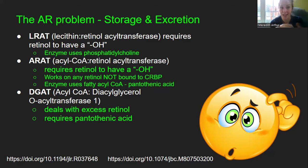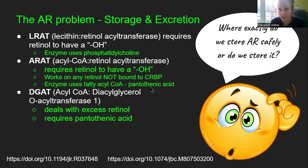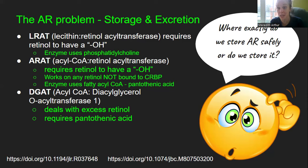DGAT (acetyl-CoA diacylglycerol acyltransferase 1) deals with excess retinol and also requires pantothenic acid. So where exactly do we store anhydroretinol? We don't. We can only store it if we convert it back to rehydroretinol, and to do that we have to buffer alcohol or not have alcohol in the system. Retinol needs to all be bound up — we don't want free retinol in the cell acting like a primary alcohol. It needs to be on cellular retinol binding protein. Very high vitamin A intake can cause a problem because you exceed the cell's capacity.